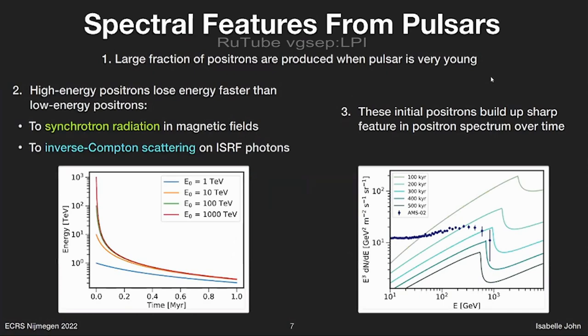Now I'm going to explain why we would expect a sharp spectral feature from pulsar models, and then why we don't. A very large fraction of the total positrons that a pulsar produces over its entire lifetime is produced in the first thousands of years, when the pulsar is very young. So we get a lot of positrons at once. Even though these are produced at different energies, high-energy positrons go faster than low-energy positrons, and they lose energy in magnetic fields and the interstellar radiation field as they propagate.